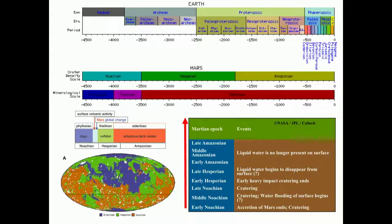The environments are important because they give us habitability conditions, particularly environments related with the presence of liquid water. During the early Noachian, accretion ends and cratering starts. During the middle Noachian, water flooding of the surface begins. During the late Hesperian, liquid water begins to disappear from the surface, and in the middle Amazonian it is no longer present. Being conservative, it is estimated that during the first gigayear, Mars had liquid water on the surface — we don't know exactly if this is enough time for life to emerge and evolve, but we have at least 1,000 million years for this possibility.